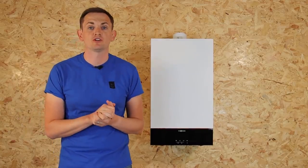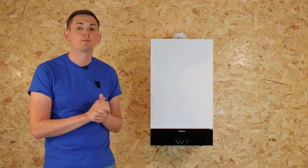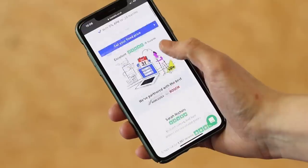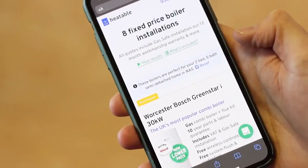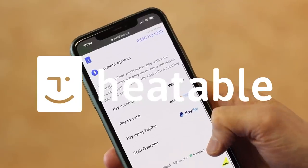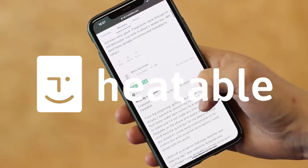So in this video, we're going to cover the new Viessmann 100 combi boiler. This is a brand new product that's just come out this week. Just before we head into this video, if you're in the market for a new boiler, head over to heatable.co.uk. We'll be able to get a fixed price and have it installed within 24 hours.